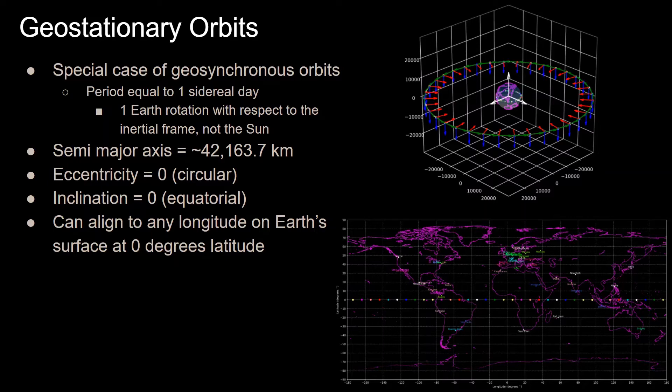A sidereal day is the amount of time Earth takes to make a 360-degree rotation about the inertial frame, not a 360-degree rotation with respect to the Sun. I'll go over this in more detail in the geosynchronous orbits video, which I'll have a link in the description to, but it's just a minor detail.